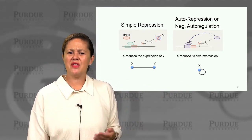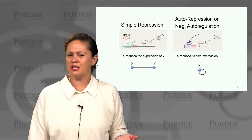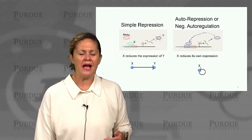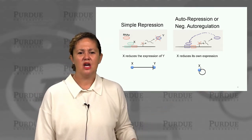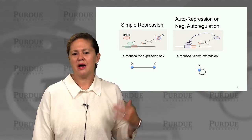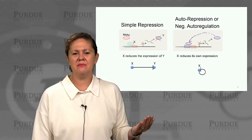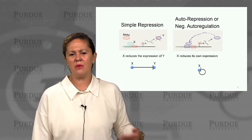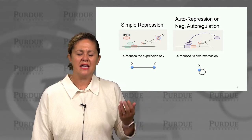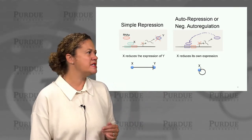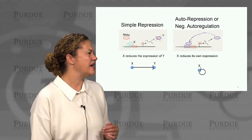You may ask yourself, that's sort of a strange motif. Why, if I want to make a bunch of X, would that come around and inhibit itself? Why would it have that negative feedback? And that's what we're going to take a look at today.